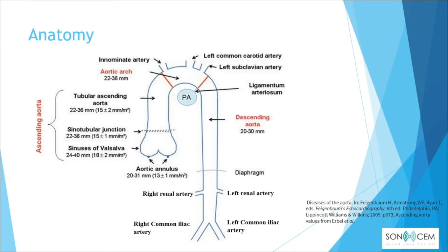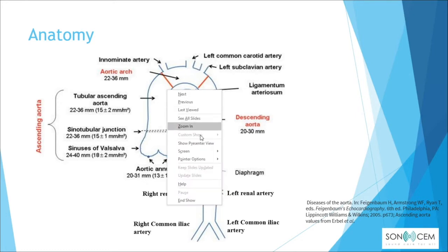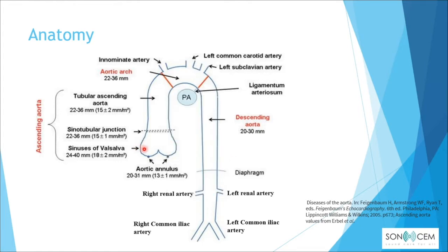The aorta is the major conduit conveying blood from the heart to the systemic circulation. It originates immediately beyond the aortic valve and gives off the coronary arteries, then curves forming the aortic arch with branches including the brachiocephalic trunk, left common carotid artery, and left subclavian artery. Descending further, below the diaphragm, the abdominal aorta runs retroperitoneally and bifurcates into the common iliac arteries at the level of the fourth vertebra.